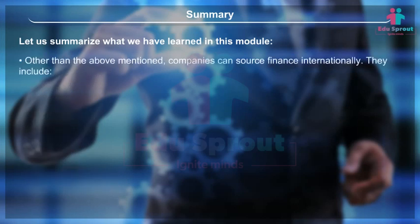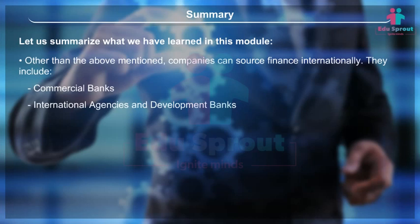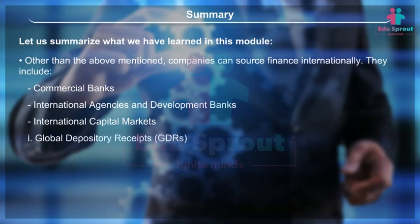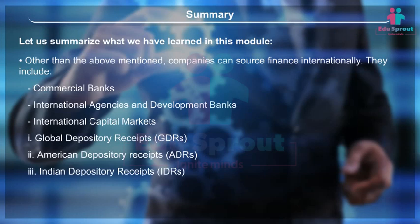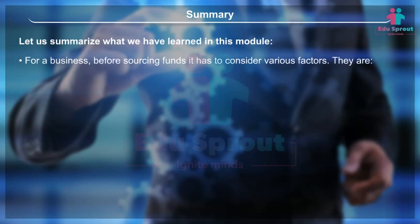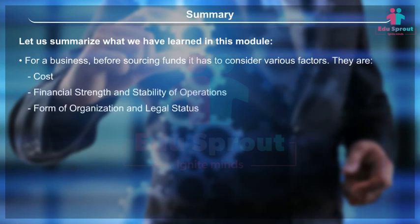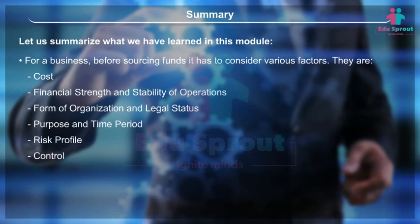Companies can also source finance internationally through commercial banks, international agencies and development banks, and international capital markets — including Global Depository Receipts (GDRs), American Depository Receipts (ADRs), Indian Depository Receipts (IDRs), and Foreign Currency Convertible Bonds (FCCBs). Before sourcing funds, a business must consider various factors: cost, financial strength and stability of operations, form of organization and legal status, purpose and time period, risk profile, control, effect on creditworthiness, and flexibility and ease.